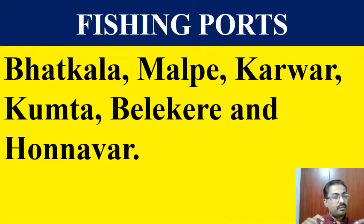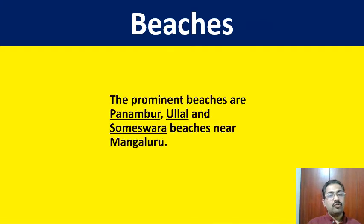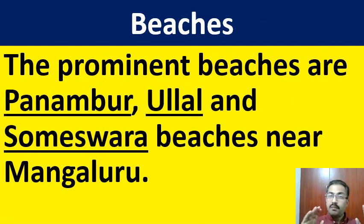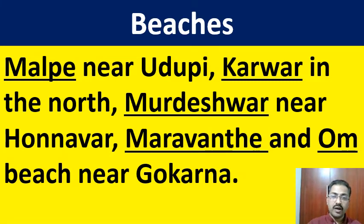You need to learn all these fishing ports because pick-the-odd-one-out questions may be asked. Batkala, Malpe, Karwar, Kumta, Belekeri, and Honnavara are the fishing ports of the coastal plain of Karnataka. The prominent beaches are Panamburu Beach, Ullal, Someshwara near Mangaluru, Malpe near Udupi, Karwar in the north, Murudeshwara near Honnavara, and Marvante and Om Beach in Gokarna. These are all the important beaches of our coastal plain.